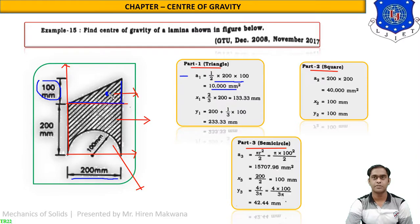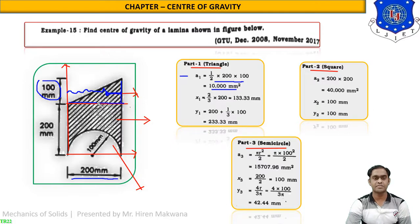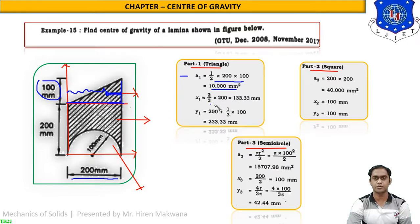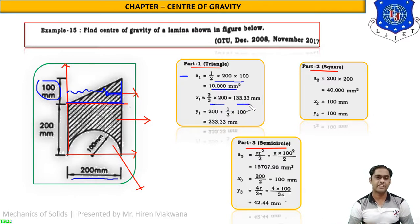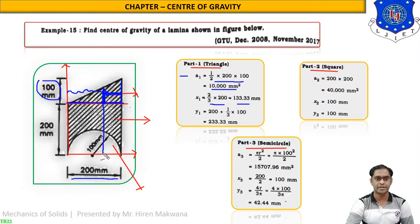The CG of the triangle from the base is h/3, and from the y-axis it is 2h/3. With height = 200 mm, x1 = (2/3) × 200 = 133.33 mm. For y1, measured vertically: 200 + (1/3 × 100) = 233.33 mm.